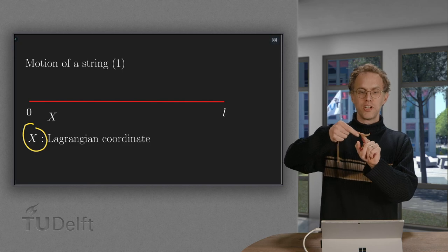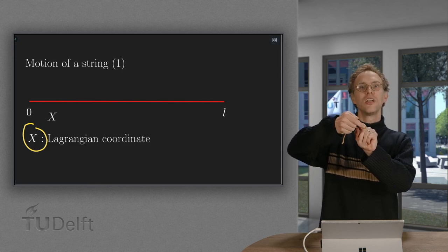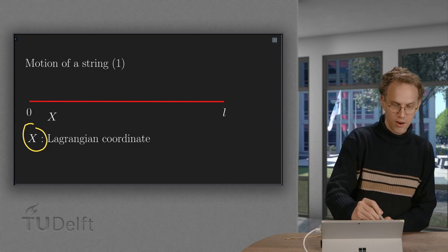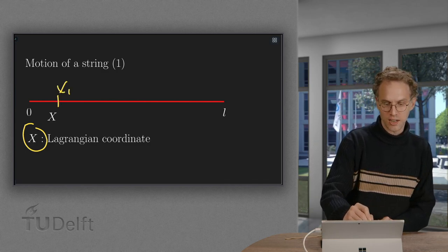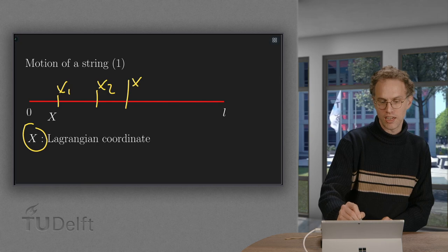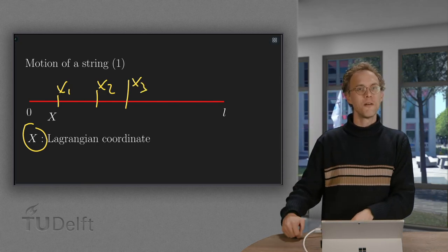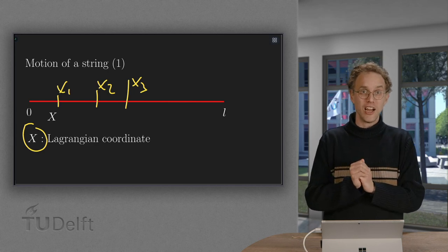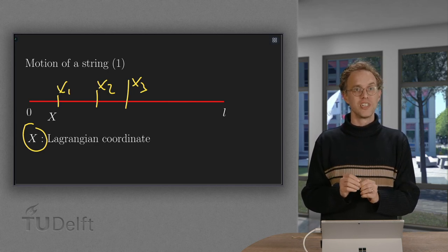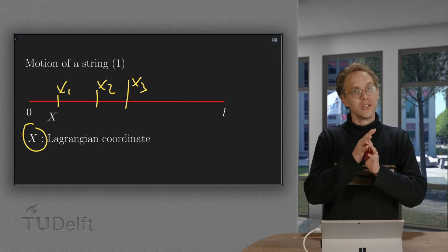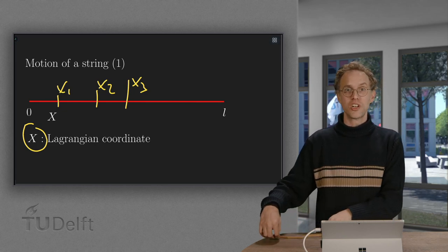So we have our capital X1, capital X2, capital X3, capital X4. All points on the string have their own capital X. And no matter where the string moves through space, the capital X, its Lagrangian coordinate, always stays attached to this specific point on the string. So that's one way to describe the string.